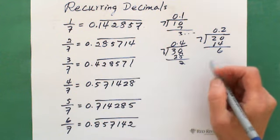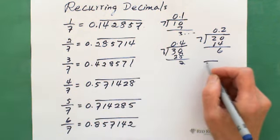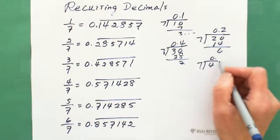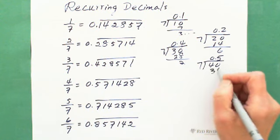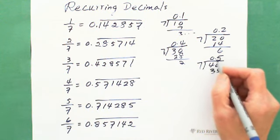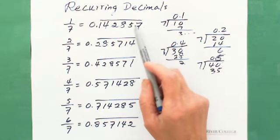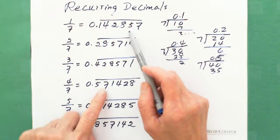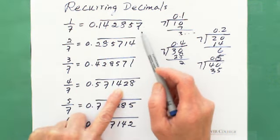If you divide by 4, the first digit is 5, because 5 times 7 is 35. Starting from 5, you can find the pattern: 5, 7, 1, 4, 2, 8.